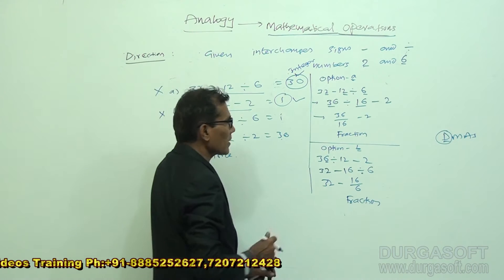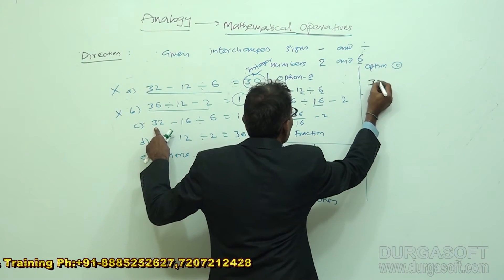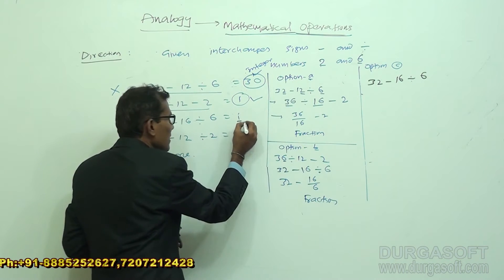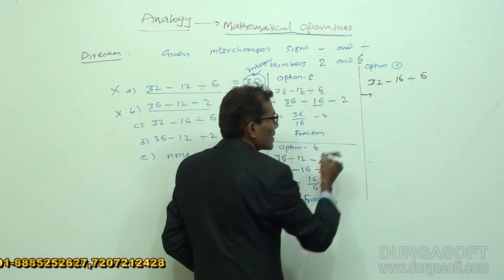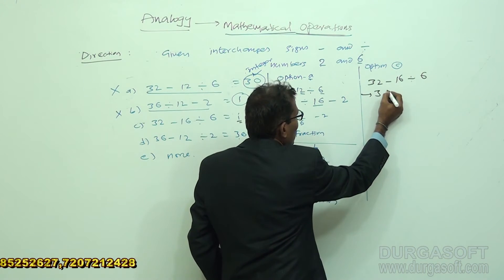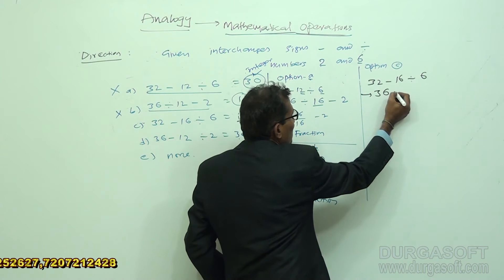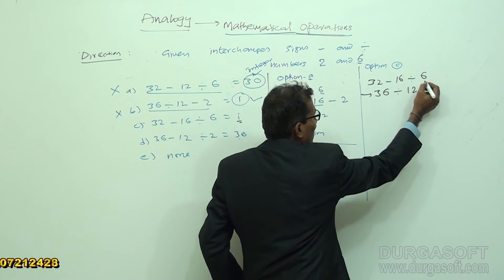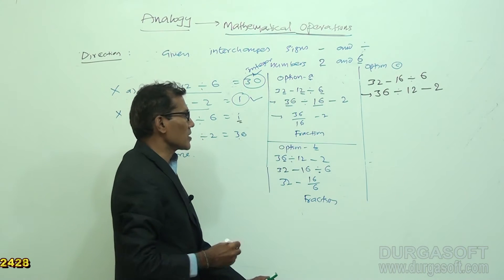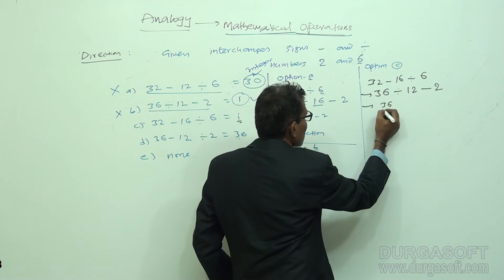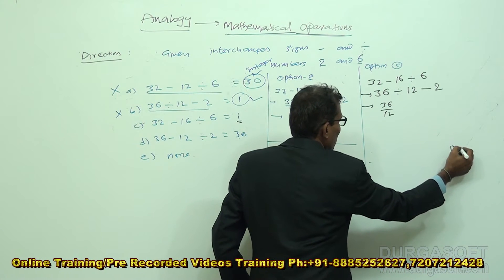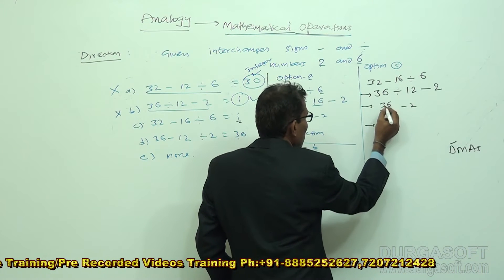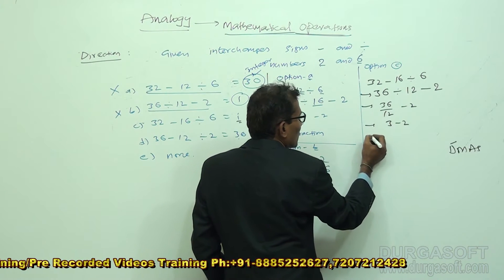Now we take option C. The given expression is 32 minus 16 divided by 6, and it must give the result 1. After making the necessary changes — 2 replaced by 6, minus replaced by division, 1 as it is, 6 replaced by 2, division replaced by minus, 6 replaced by 2 — we get 36 divided by 12 minus 2. According to DMAS, operating division first: 36 divided by 12 is 3, then 3 minus 2 equals 1.